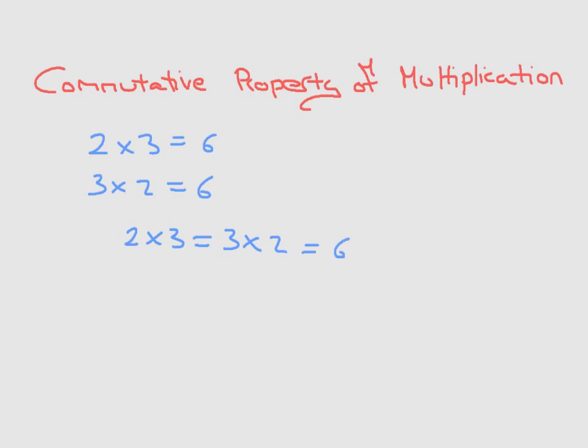More generally, if we have any two numbers, a and b, whether we write a times b, it is exactly the same thing as writing b times a. That's known as the commutative property of multiplication.